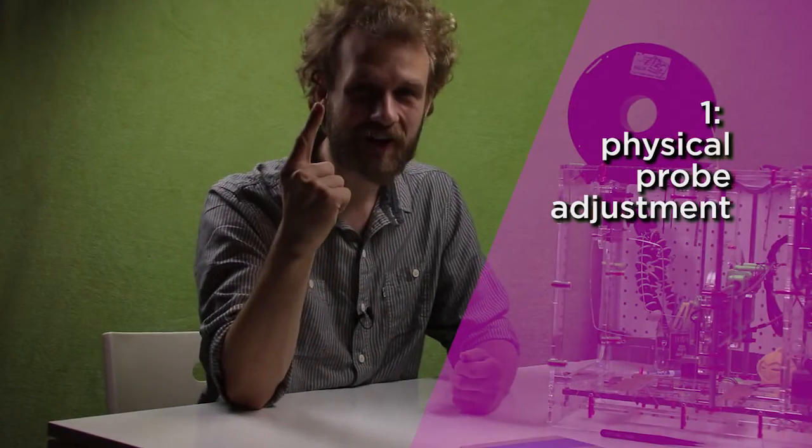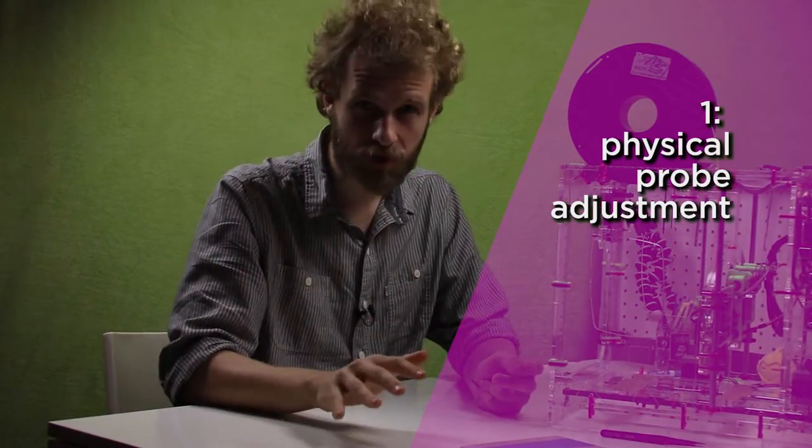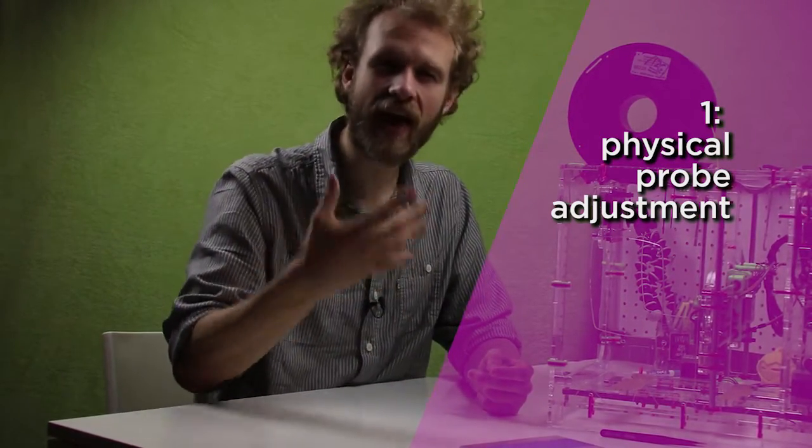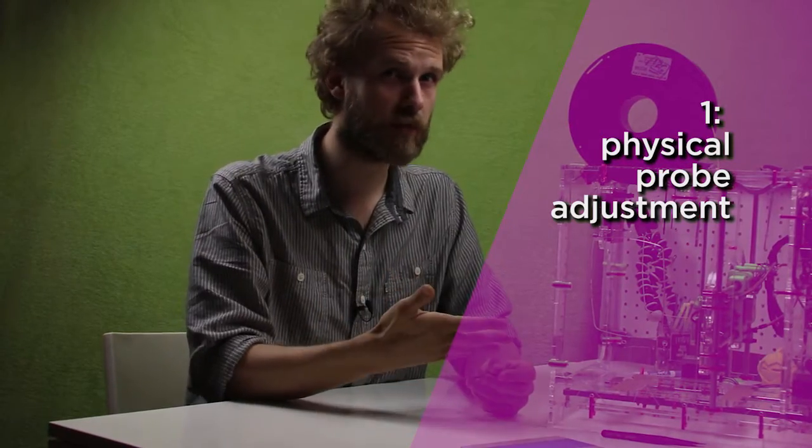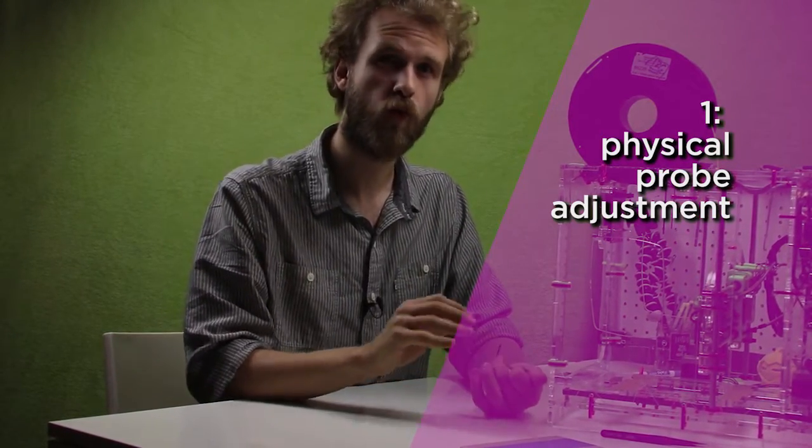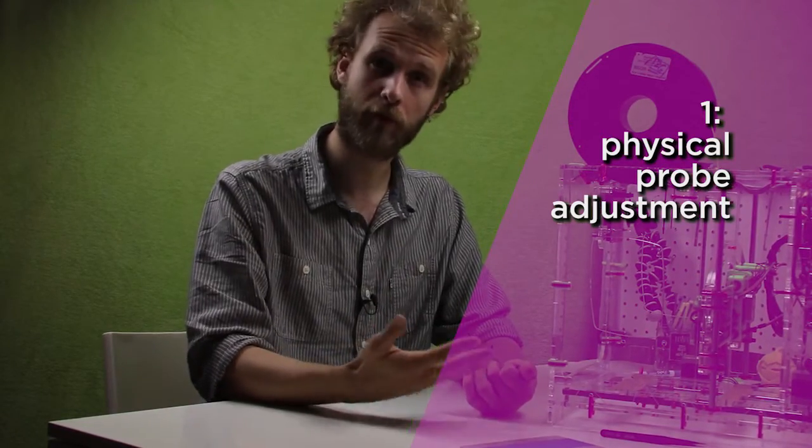There are two parts to the process of getting the first layer height right. First, we need to physically move the proximity sensor, the Z probe, into a position in which it can actually sense the electromagnetic field of the aluminum build plate. In other words, we need to get the proximity sensor within its sensing distance from the plate.